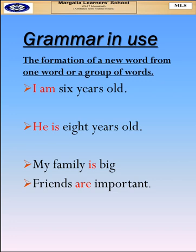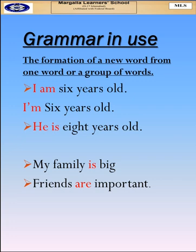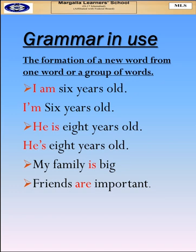Now let us see something about grammar. The thing we are studying today is the formation of new words from one word or group of words. For example: 'I am 6 years old' — instead of writing 'I am' we can write it in short as 'I'm'. Similarly, 'he is 8 years old' can be shortened. When we talk about only one thing, we use 'is' — for example, 'My family is big'.